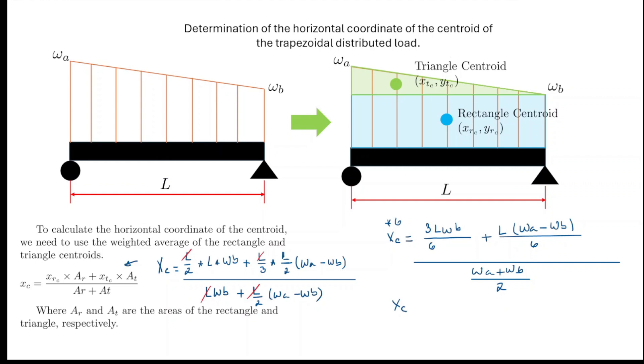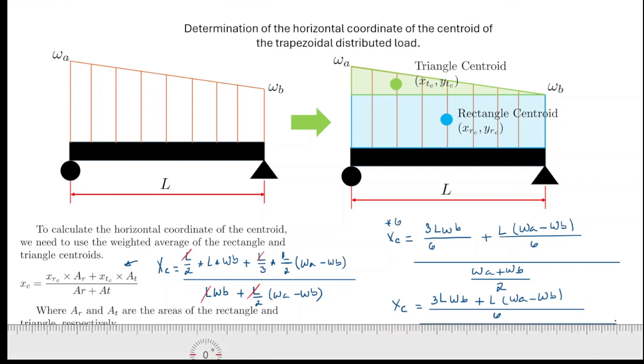It's going to be XC is going to be equal to 3LWB plus L that multiplies (WA - WB). And this is going to be divided by six, and the big one here is going to be (WA + WB)/2.